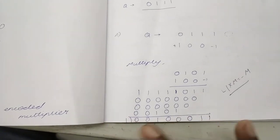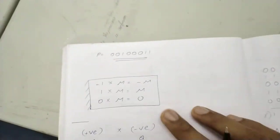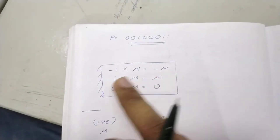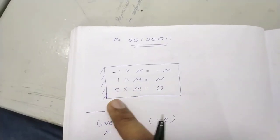We got the product as 0, 0, 1, 0, 0, 1, 1. That is our product, which is written here. Remember, minus 1 into m is minus m, 1 into m is m, and 0 into m is 0.